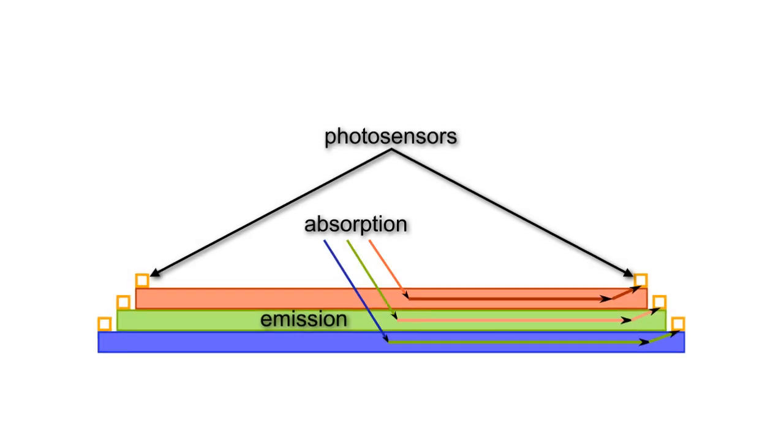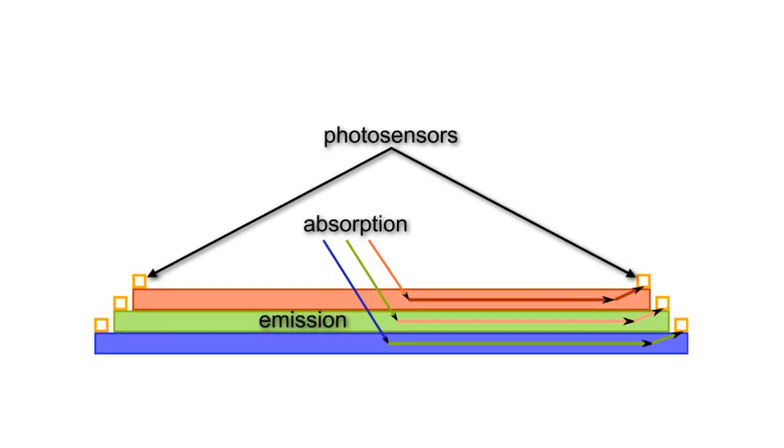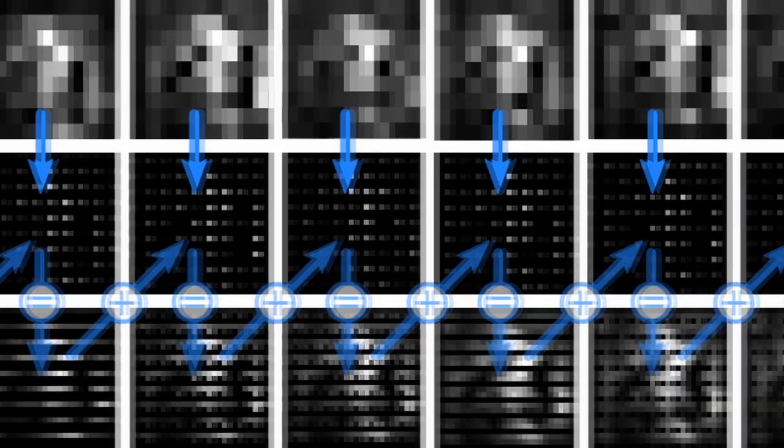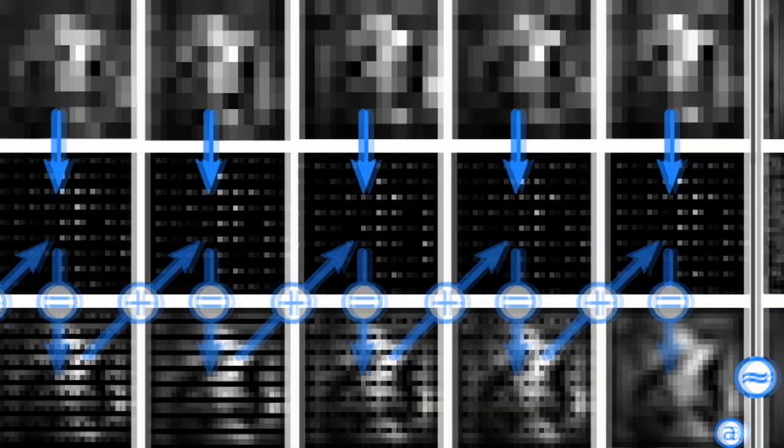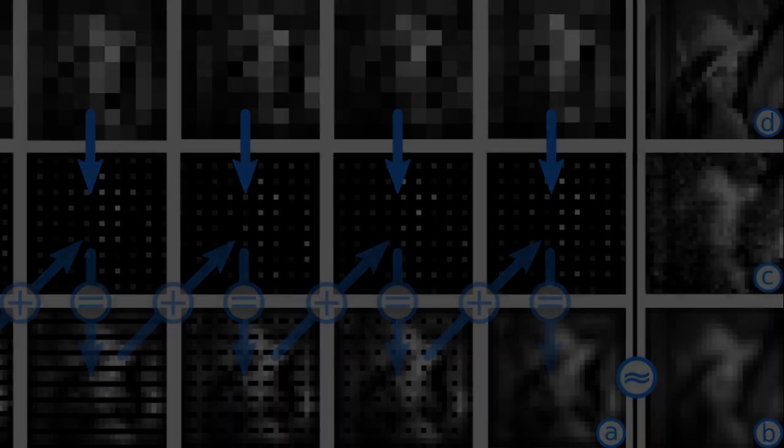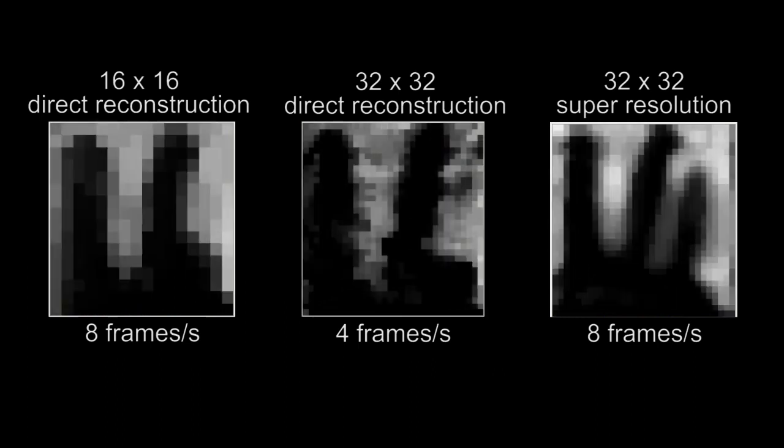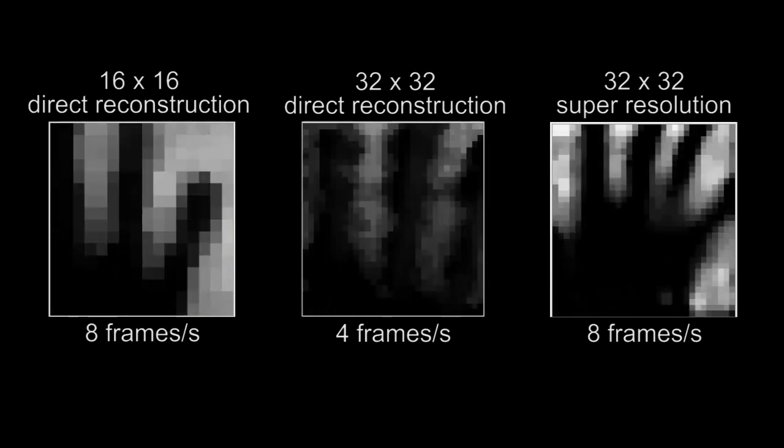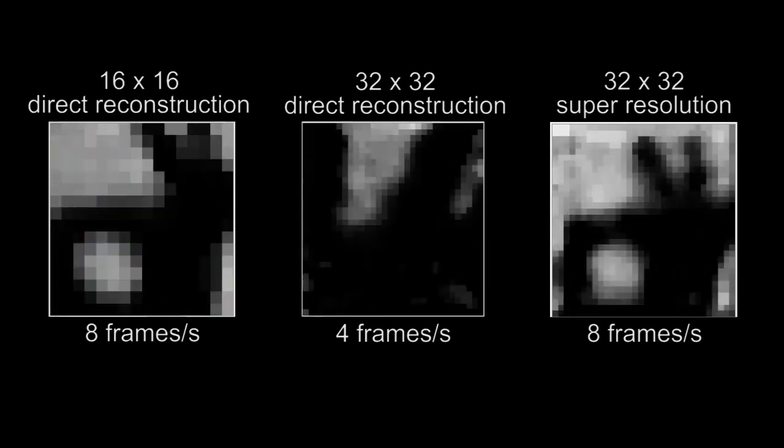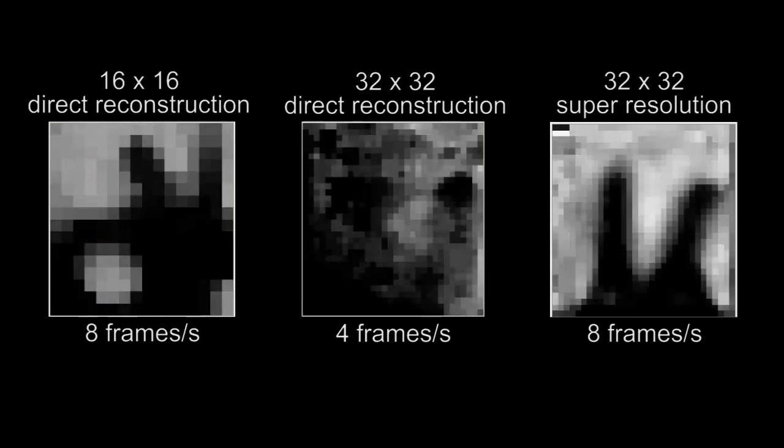Multiple stacked layers with different wavelength responses allows the reconstruction of color images. From multiple subpixel shifted and low resolution sensor calibrations, higher resolution images can be computed. Our super-resolution approach leads to a better image quality at the same reconstruction speed as for a direct low resolution reconstruction.